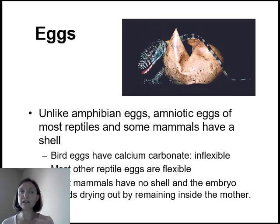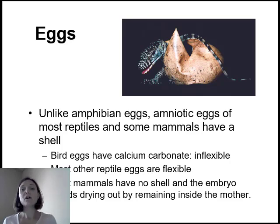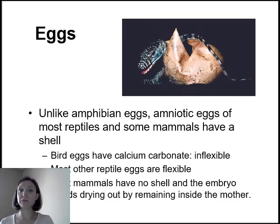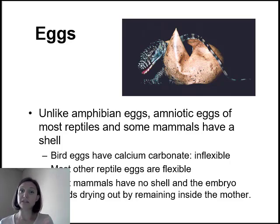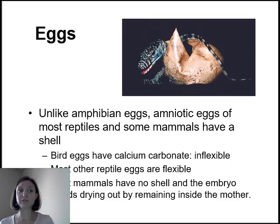We call it ovoviviparity when they keep the egg inside the mother and it hatches inside, looking like live birth. Or true viviparity, which is true live birth — there's no eggshell, basically replaced by the placenta, and nutrient transfer and moisture maintenance is handled through the mother. This is what makes this amniotic egg such a big deal: it allows them to exist and reproduce away from water.